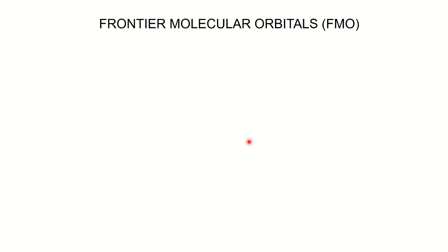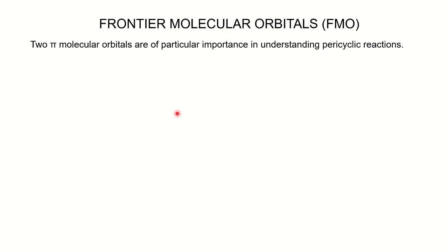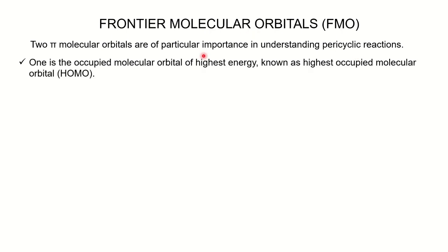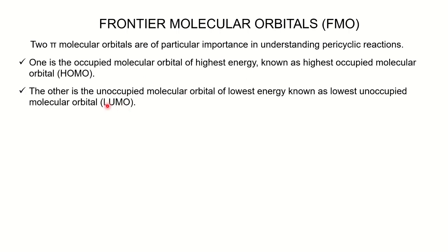Frontier molecular orbitals — short form FMO. The two pi molecular orbitals are very important to understand pericyclic reactions. The first is HOMO, which stands for Highest Occupied Molecular Orbital — it has the highest energy. The other is LUMO, the Lowest Unoccupied Molecular Orbital, having the lowest energy among the unoccupied orbitals.